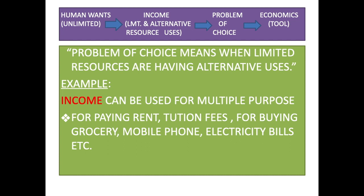So what do we do? According to our priority, we will rank these alternatives. First, we would want to buy the grocery, then pay the electricity bill, then pay the rent, then tuition fees, then for the mobile phone and other alternatives. That means we will use this limited income first to pay the electricity bill, then to buy grocery, then to pay rent, then tuition fees, and so on. Accordingly, we will utilize this limited resource.